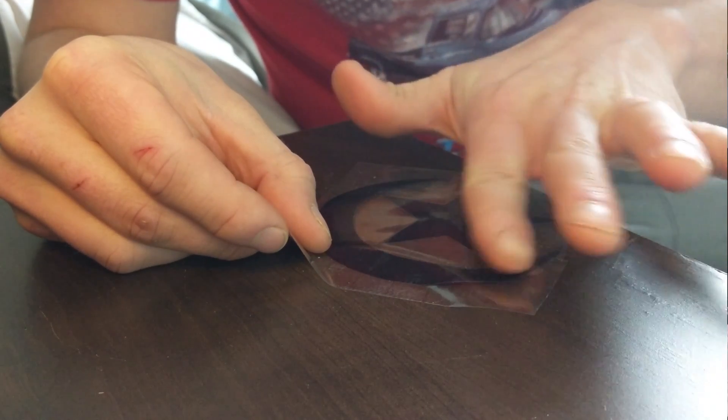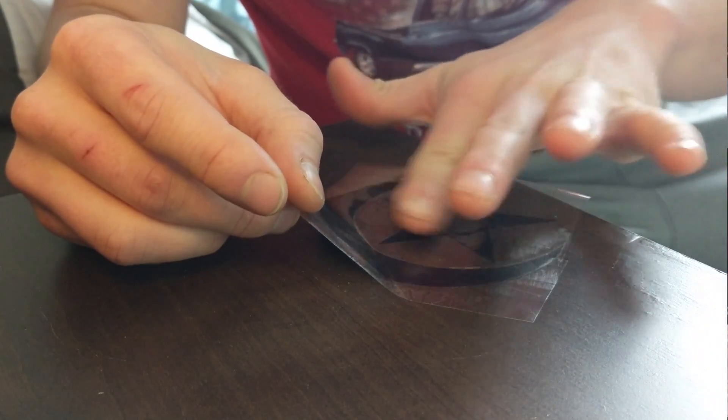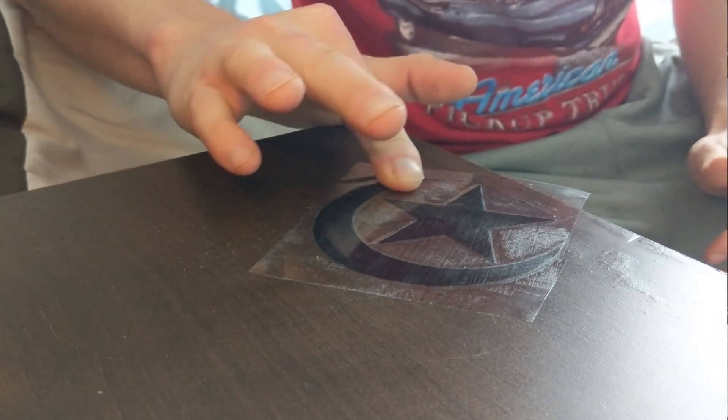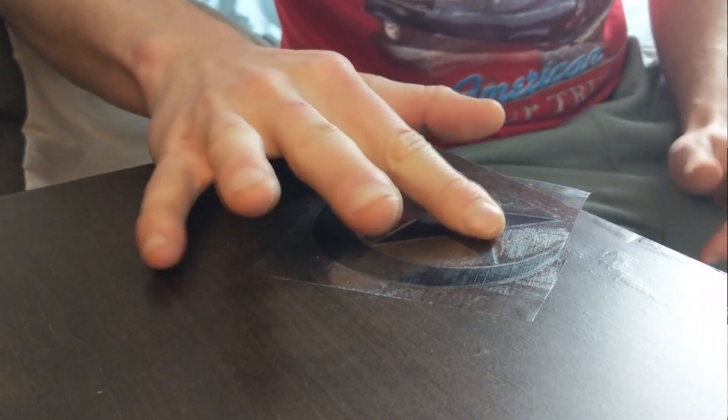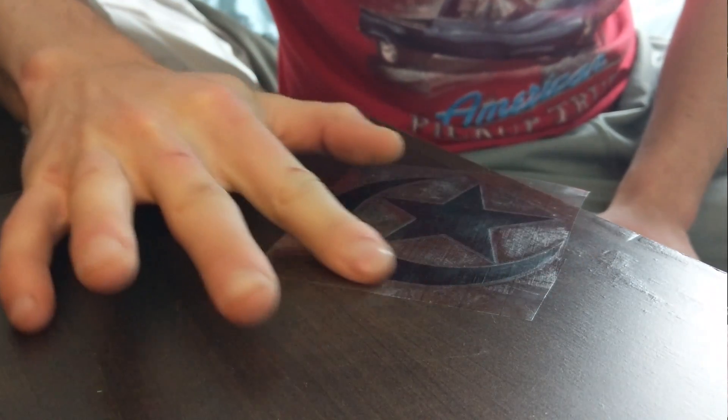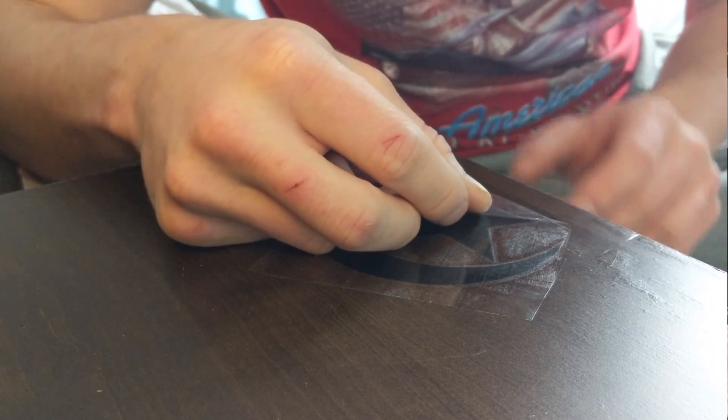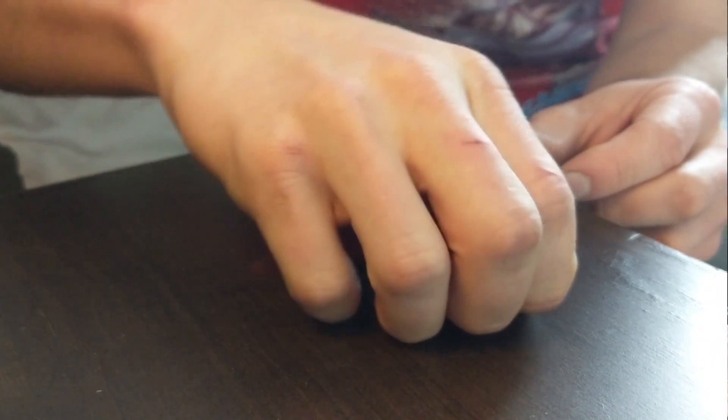I'm just going to place it just like that. Since this is circular, you want to start in the center and kind of work it out. There we go. And then just push the vinyl down, making sure that it is stuck to the surface and not the transfer tape anymore. And then just peel the transfer tape up. Make sure that the vinyl is still stuck. In some places, it will try to peel up.